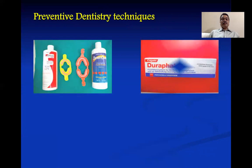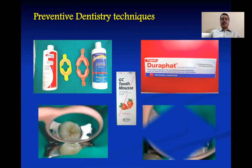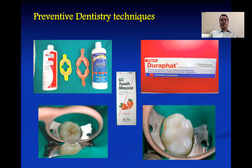Coming on to preventive dentistry techniques: we use topical fluorides for prevention of dental caries, fluoride varnishes, and GC Tooth Mousse. The pit and fissure sealant has been applied on a young permanent tooth which has erupted. Deep pits and fissures are susceptible to dental caries, and for highly caries-prone individuals we can utilize pit and fissure sealants to seal them and prevent the occurrence of dental caries.